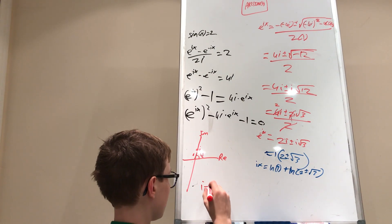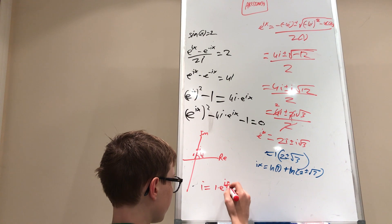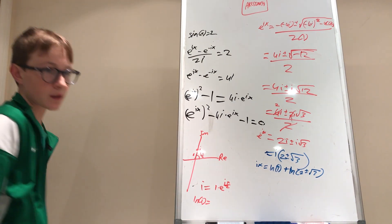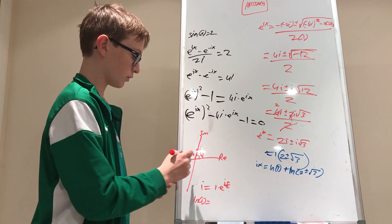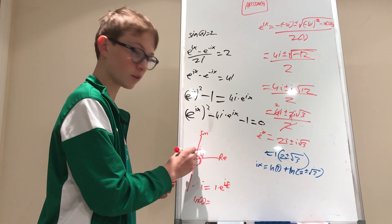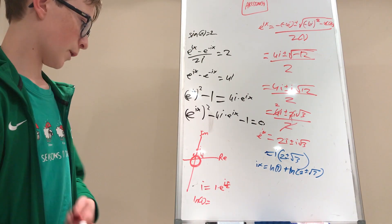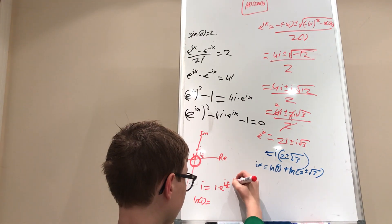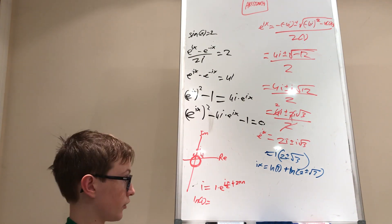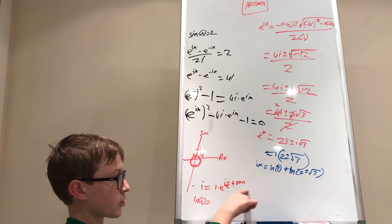So i = 1·e^(iπ/2). But it's also perfectly reasonable to go around a full 2π radians multiple times, so i = e^(i(π/2 + 2πn)) for any integer n. This means we can go around 360 degrees and still get i, which is why arcsin(2) has an infinite number of solutions. For now we'll just take the principal value, which uses e^(iπ/2), giving ln(i) = iπ/2.